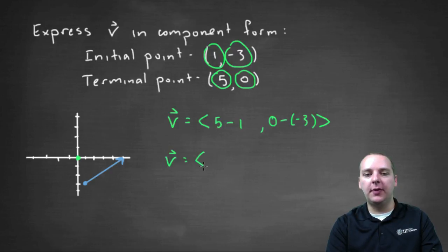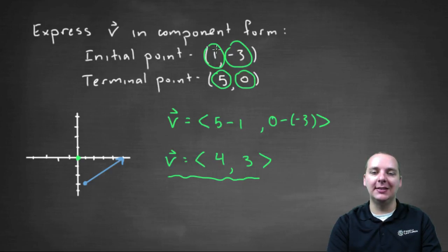So finish out the algebra, five minus one is four. Zero minus negative three makes positive three. And this is our vector in component form that has this initial point and terminal point.